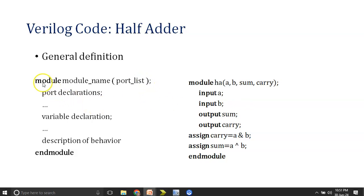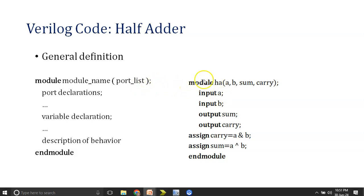Whenever you are writing Verilog code you need to start with the 'module' keyword, written in lowercase, and you need to end that module with 'endmodule'. These are mandatory keywords. You need to give a name to the module and write the available ports in brackets. On the right hand side you are able to see the code for half adder — the keyword 'module' starts and 'endmodule' ends it.